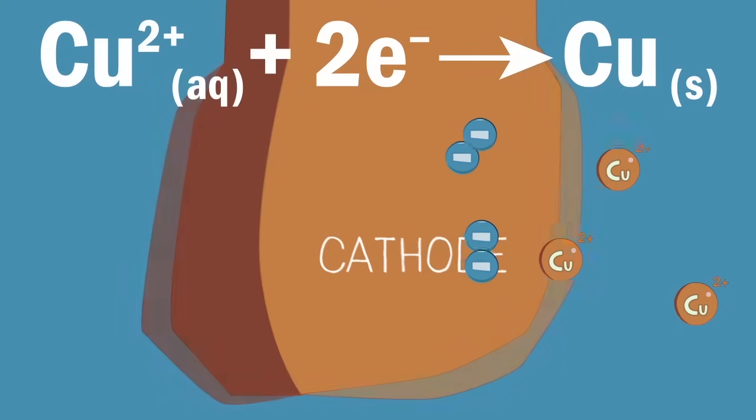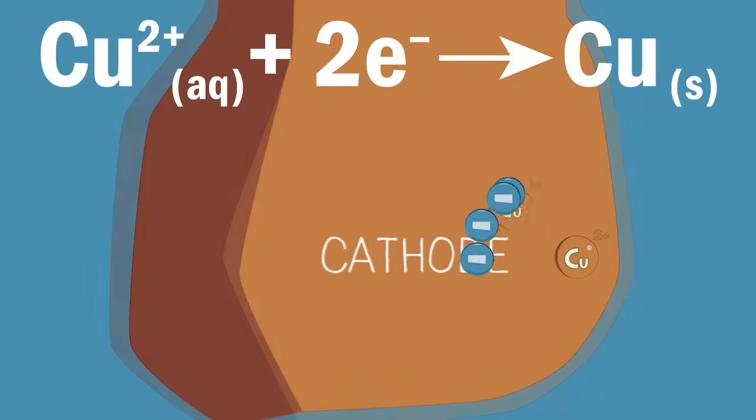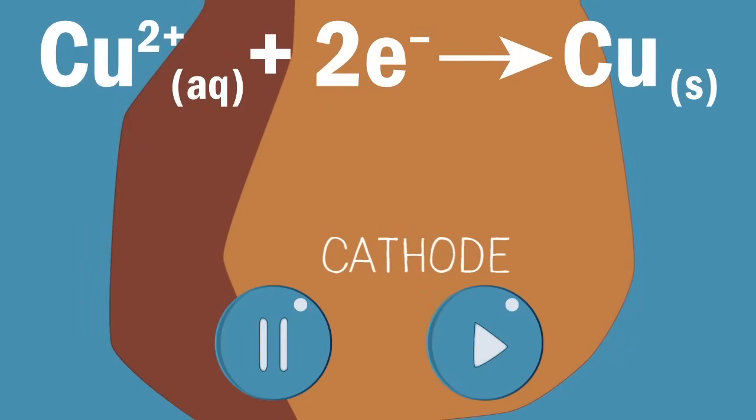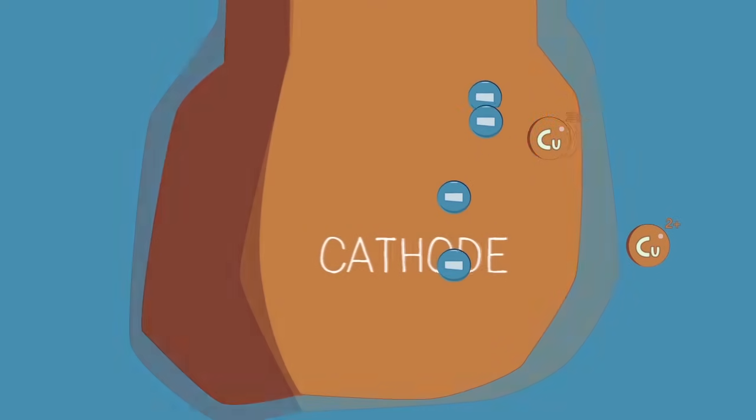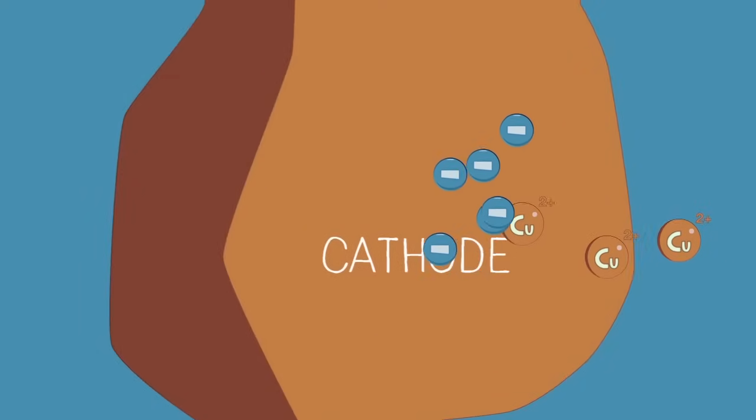As this happens, what do you notice happens to the size of the strip? Pause and continue when ready. The answer is that you should notice the cathode strip getting larger because pure copper metal is being deposited at the cathode.